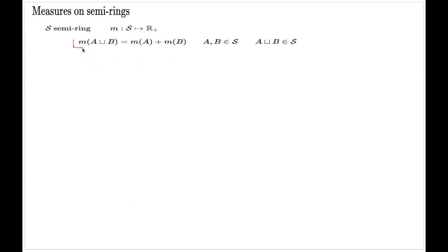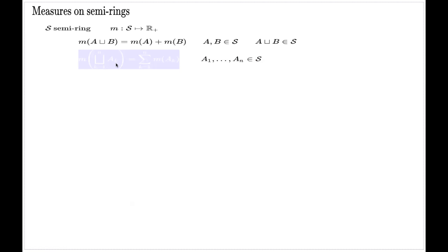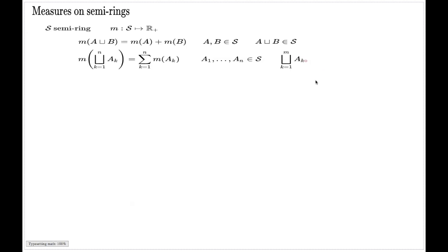With the method of mathematical induction, this property can be straightforwardly extended to finitely many elements of a semi-ring. If we have any chosen elements of a semi-ring, it will also be true for the measure on a semi-ring that the measure of a disjoint union equals the sum of the individual measures. However, because this conclusion is reached by mathematical induction, we require that every partial union — for every M from 1 to N — is an element of the semi-ring.